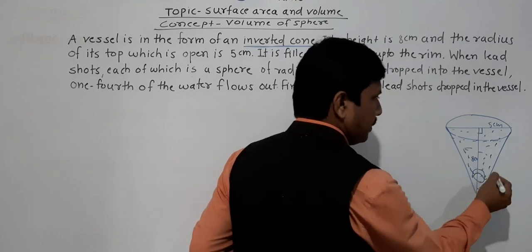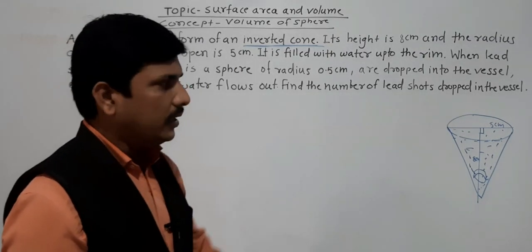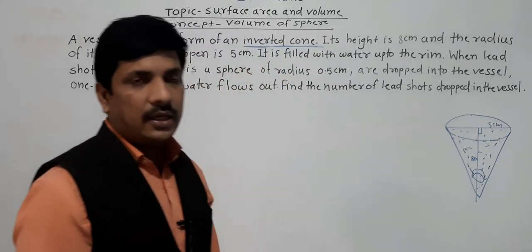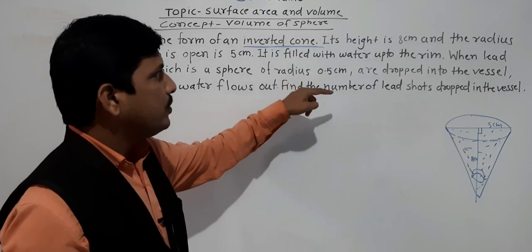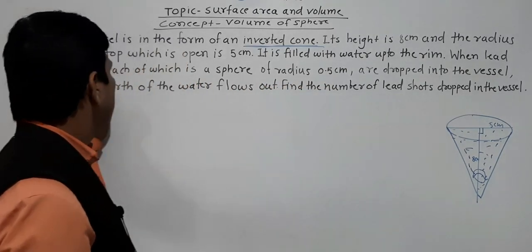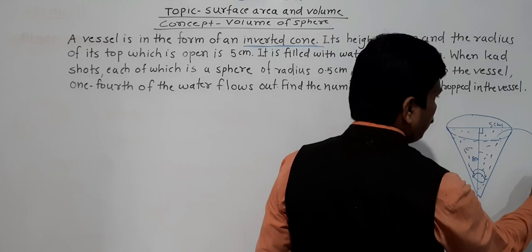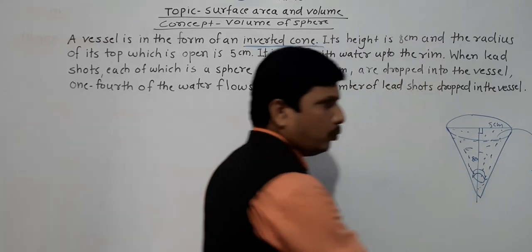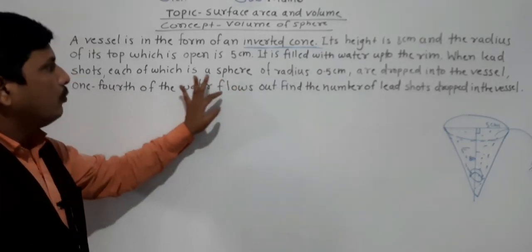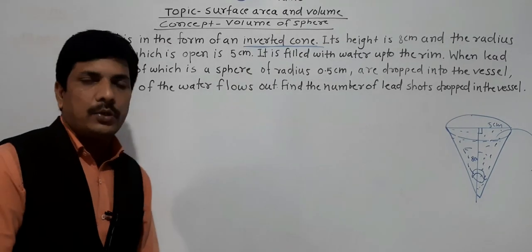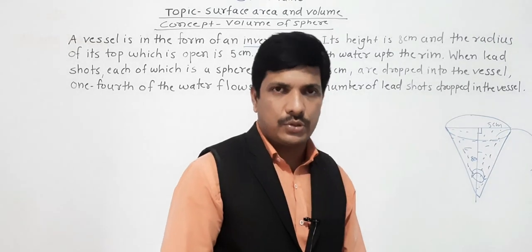A sphere of radius 0.5 cm is dropped into the vessel — like that, some spheres are there. That number of spheres we are going to find out. When spheres are dropped into the vessel, one fourth of the water flows out. Find the number of lead shots dropped into the vessel — that is the question.